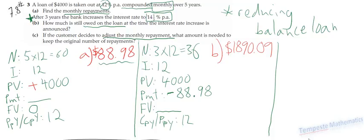So continuing the same example from before, we're going to look at Part C now. Part C: the customer decides to adjust the monthly repayment, and what amount is needed to keep the original number of repayments. So they still want the loan paid off after the normal amount of time, but they want to change the amount that they're paying. So they want to change this PMT amount.